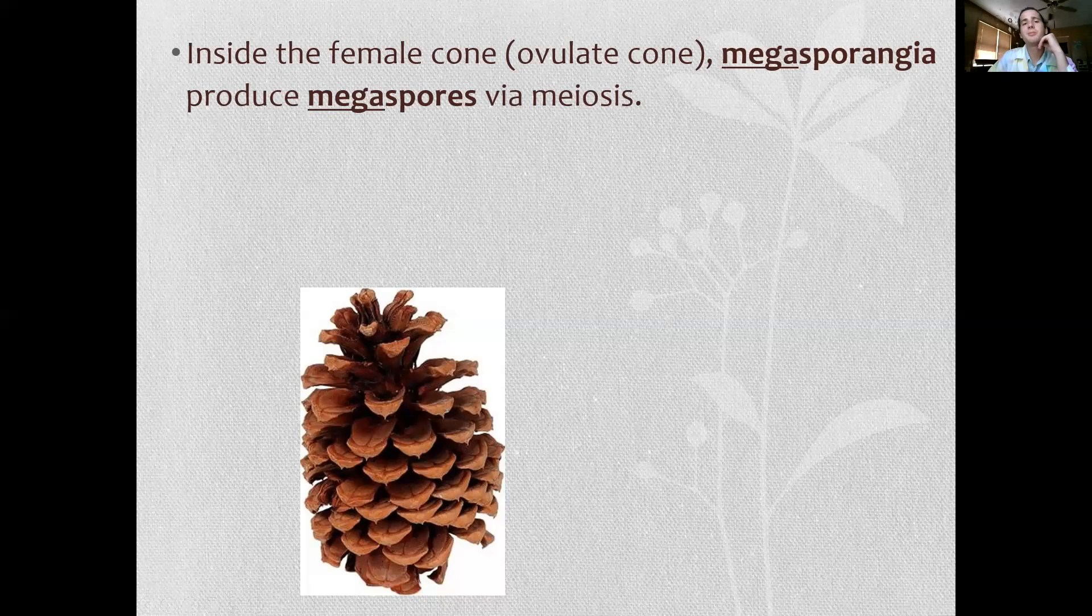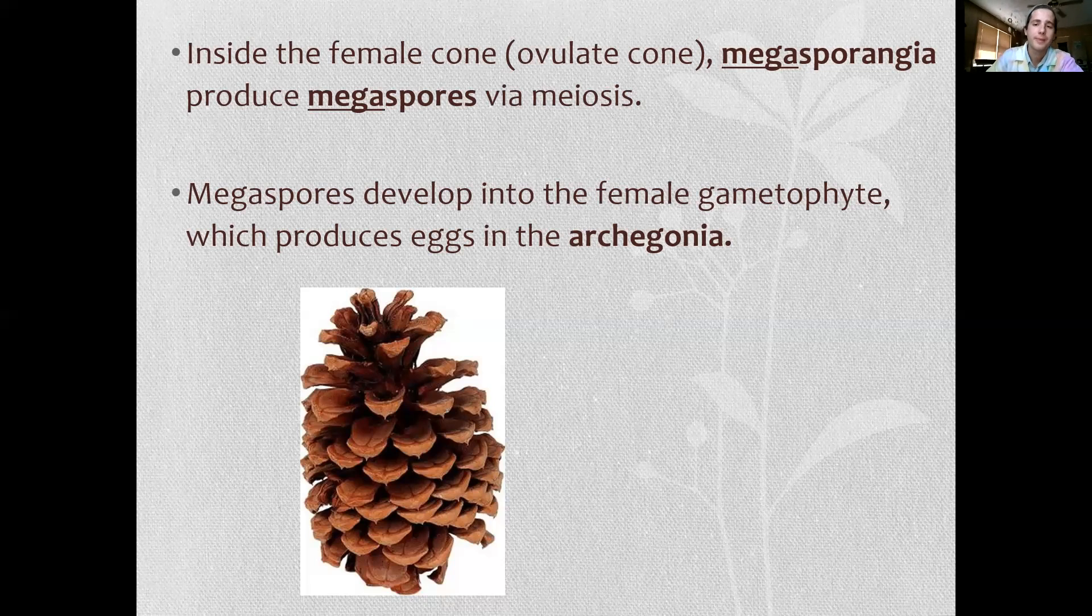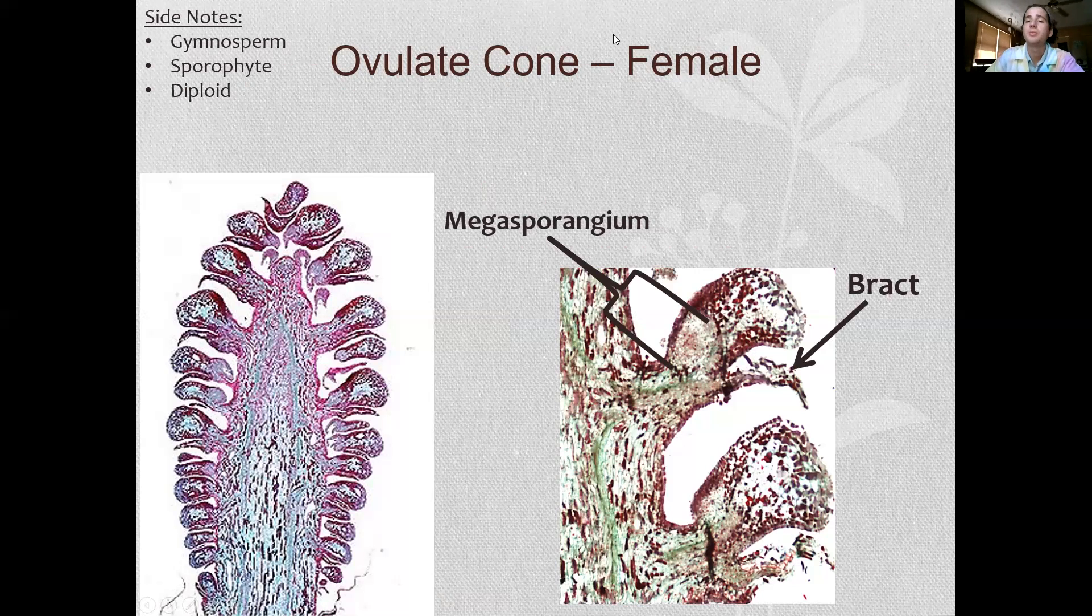Real quick, back to our PowerPoint. So inside the female cone, megasporangia produce megaspores via meiosis. Megaspores develop into the female gametophyte which produces eggs in the archegonia. So your ovulate cone—which is female—ovulate female, staminate male. You might notice that on these, your megasporangia are on top of the bracts, not underneath them. So let's go ahead and take a look at our real life example of that.